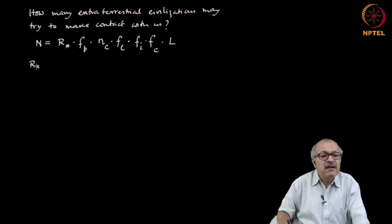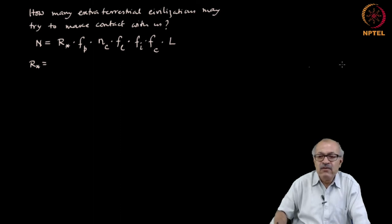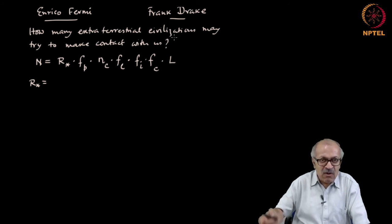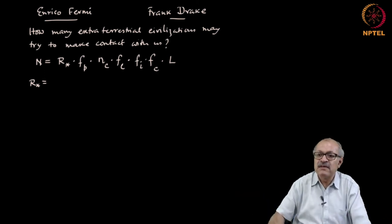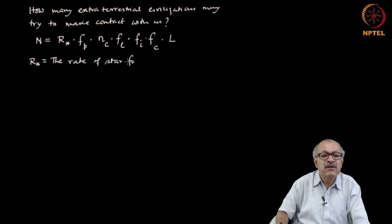R star is the average rate of star formation in our galaxy. We are assuming that the extraterrestrial civilizations may try to contact with us if they are within our galaxy, otherwise they are too far off to be able to do that. So within our galaxy, the rate of star formation in the Milky Way galaxy. You know more or less the rate at which stars are forming.